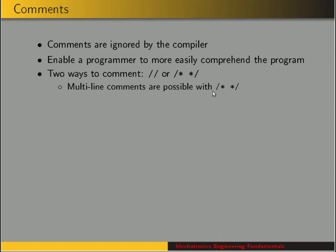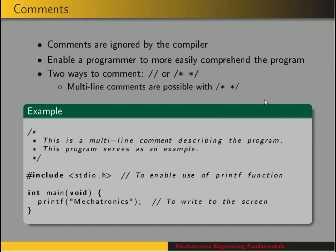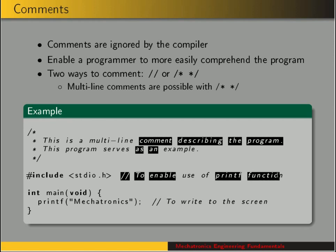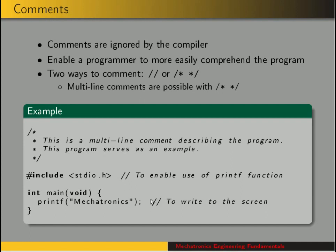If you want to do multiline comments, you can use the asterisks. Here's an example of a C program with a multiline comment — if you want to write a description of the program, you could use that. You can also put a comment at the end of each line to write a little note about what that line is doing. For instance, one comment describes what the preprocessor line is doing, and another describes what we're doing with the printf function.